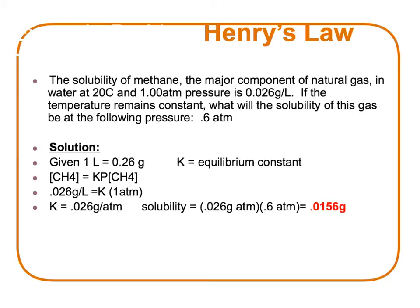To solve the problem, we are given 1 liter equals 0.026 grams. K will be our equilibrium constant, so we will have the concentration of our methane equaling K times pressure. We have 0.026 grams per liter equaling K times 1 atmosphere, which gives us K equaling 0.026 grams per atmosphere. To find our solubility, we take K times our new pressure and get 0.0156 grams per liter.